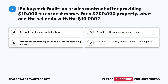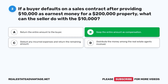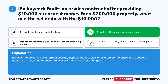Question 2. If a buyer defaults on a sales contract after providing $10,000 as earnest money for a $200,000 property, what can the seller do with the $10,000? A. Return the entire amount to the buyer. B. Keep the entire amount as compensation. C. Deduct any incurred expenses and return the remaining amount. D. Distribute the money among the real estate agents involved. The correct answer is B. Earnest money serves as a form of security deposit and is typically forfeited by the buyer in the event of default, as a way to compensate the seller for any losses or damages.